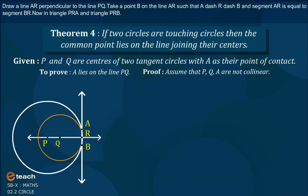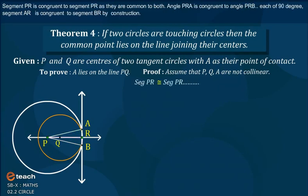Now, in triangle PRA and triangle PRB, segment PR is congruent to segment PR as they are common to both. Angle PRA is congruent to angle PRB, each of 90 degrees.